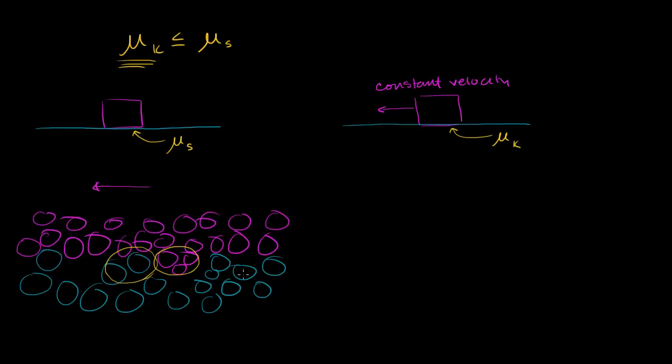Once something is already moving, and this is at least how I think about it, it doesn't have a chance to settle into these little ruts. So let me draw something that's already moving. I'll try to draw a similar surface, so I'm trying to draw the surface that looks essentially just like the one I drew. So maybe it looks like that. This is supposed to be the same surface. But once it's moving, it's not sitting in these ruts anymore. The whole thing is moving, so it's kind of sliding across the top.